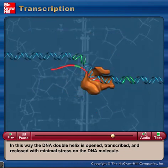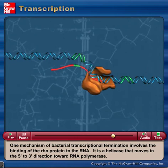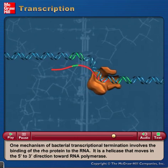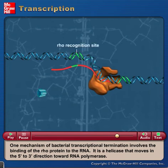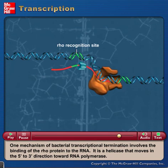One mechanism of bacterial transcriptional termination involves the binding of the Rho protein to the RNA. It is a helicase that moves in the 5' to 3' direction toward the RNA polymerase.